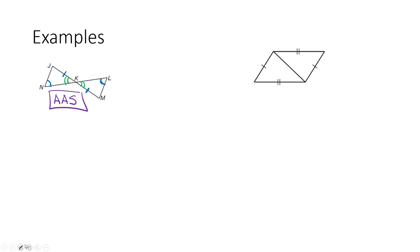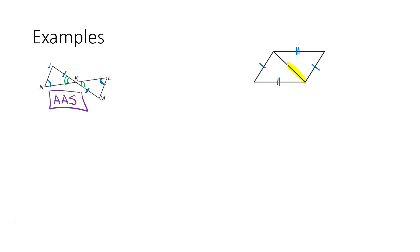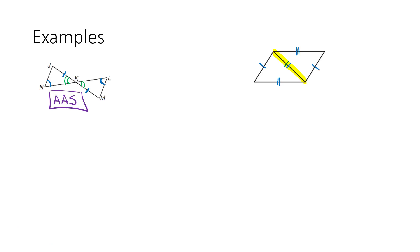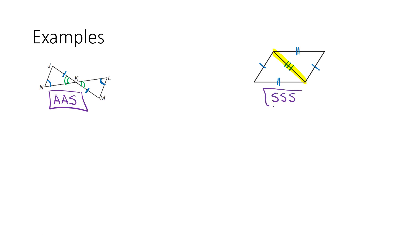How about these two triangles? We know the bottom side is congruent to the top side, and the left side is congruent to the right side. For the third piece, notice that the middle side is part of both triangles — it's obviously congruent to itself because it is itself. So that's your third side. We've got three sides, so this is side-side-side congruence.